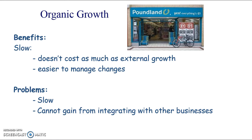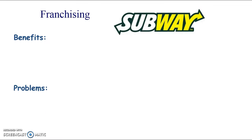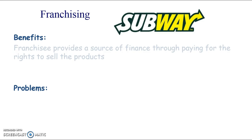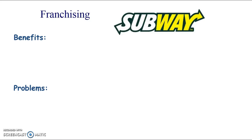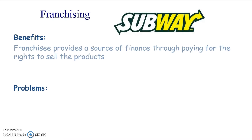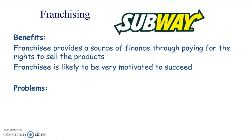Looking at becoming a franchisor - selling the rights to your business - the franchisee is the main part of the arrangement that puts up the money. For really well-known franchises, that could be anywhere from fifty thousand up to around half a million pounds to buy in. So it's going to be a lot cheaper than organic growth, which is already quite a cheap method, because the franchisee is providing all that money.